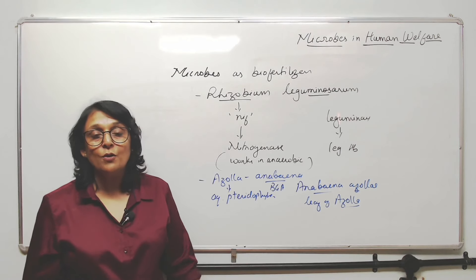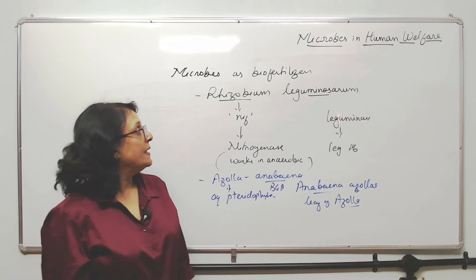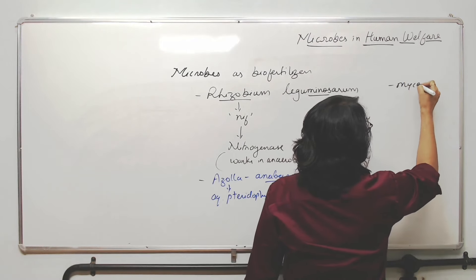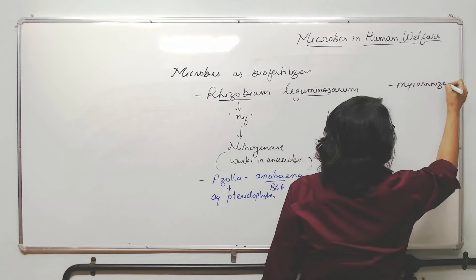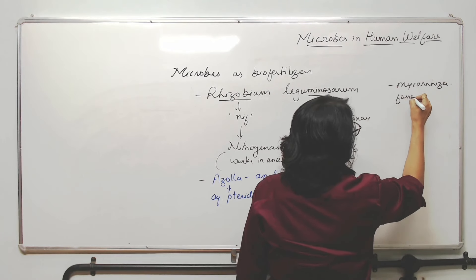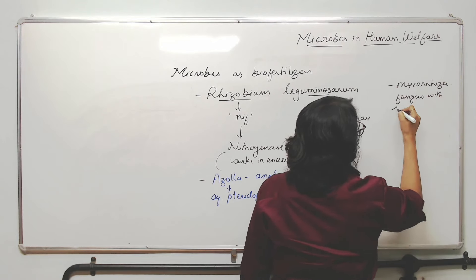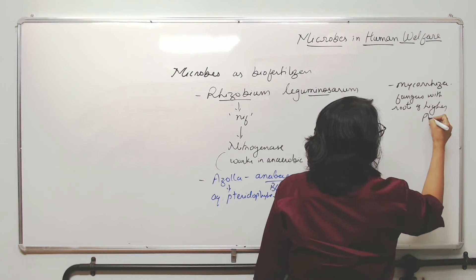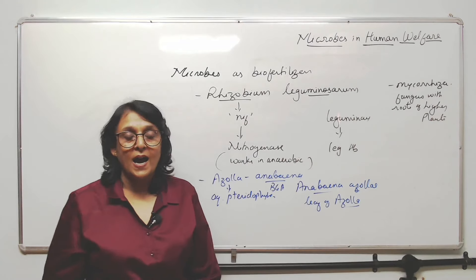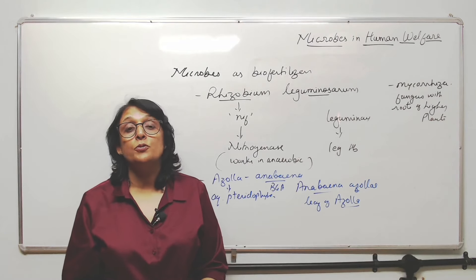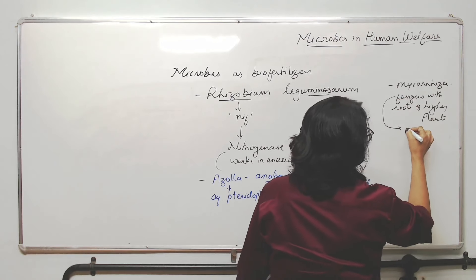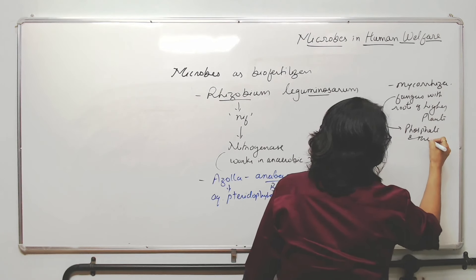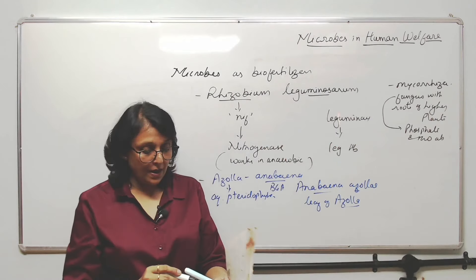Then there are mycorrhizae. Mycorrhiza is a symbiotic association of fungus with the roots of higher plants. These fungi help in absorption of phosphate — especially phosphate — and also water absorption. This is very beneficial for the plant.